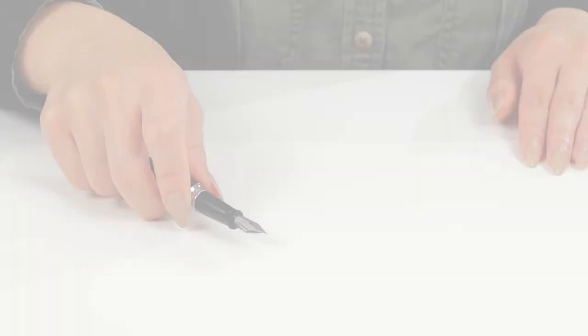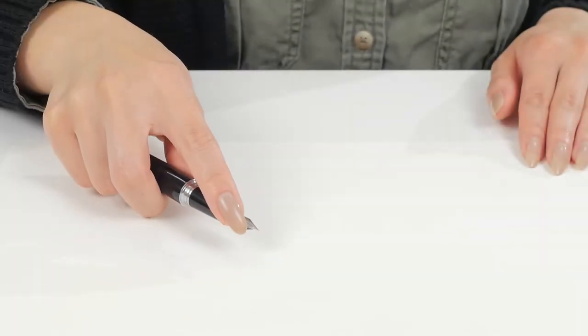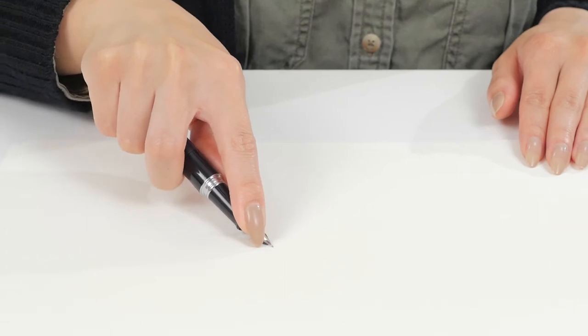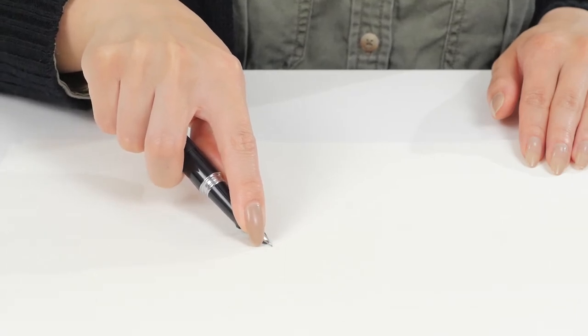This is how to correct misaligned tines. With the fingertip placed on the top side of the nib, press the tip of the nib down gently but firmly against a hard surface like a sheet of paper on a table.